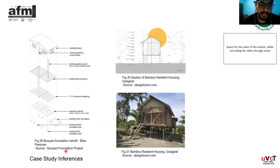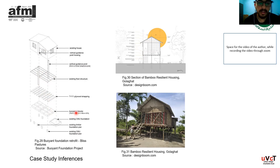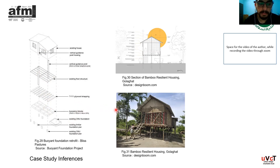Another inference from Buoyant Foundation Project: they retrofitted an existing house by adding vertical guidance posts to the existing floor structure, waterproof driver strapping, and buoyancy blocks below — either plastic barrels or expanded polystyrene, with expanded polystyrene being a more cost-effective option. The structure floats when exposed to flood water, allowing people to survive the flood event.